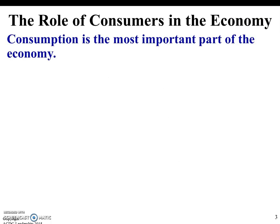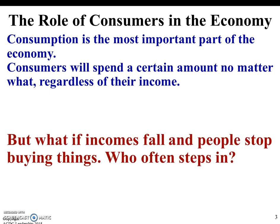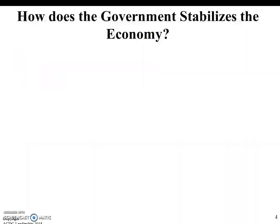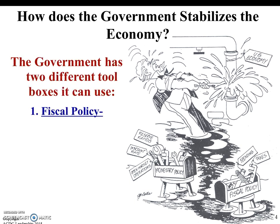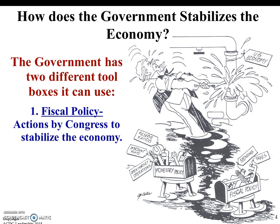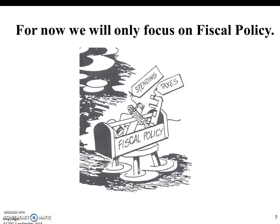What is the role of the consumer in the economy? We pretty much have the most important role because it's all about spending money — we've got to buy things. If we're not buying things, the economy is not going to grow. So what happens if incomes fall and people stop buying things? Most of the time it's going to be the government and/or the Federal Reserve. The government stabilizes the economy through two toolboxes: fiscal policy — actions by Congress to stabilize the economy — or monetary policy, which is actions by the Federal Reserve Bank. Today we're just focusing on fiscal policy.